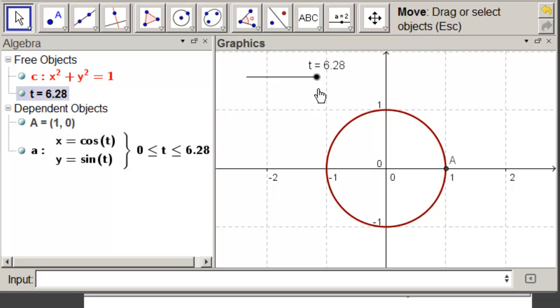it goes around exactly once and ends at 2 pi. So not only is our parameterization good, our interval is good.